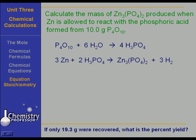In the first one we take P4O10 and we produce phosphoric acid. In the second one we take zinc and allow it to react with that phosphoric acid, producing zinc phosphate and hydrogen gas. We want to calculate the mass of zinc phosphate produced when zinc is allowed to react with the phosphoric acid that is formed from 10 grams of P4O10, and then we are going to add a wrinkle to the problem, and the wrinkle is down at the bottom.